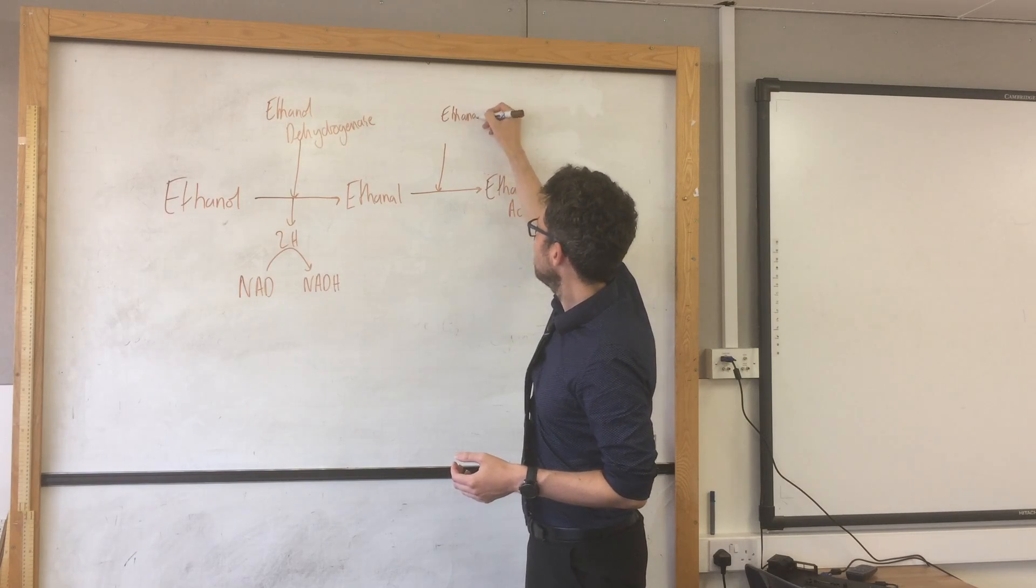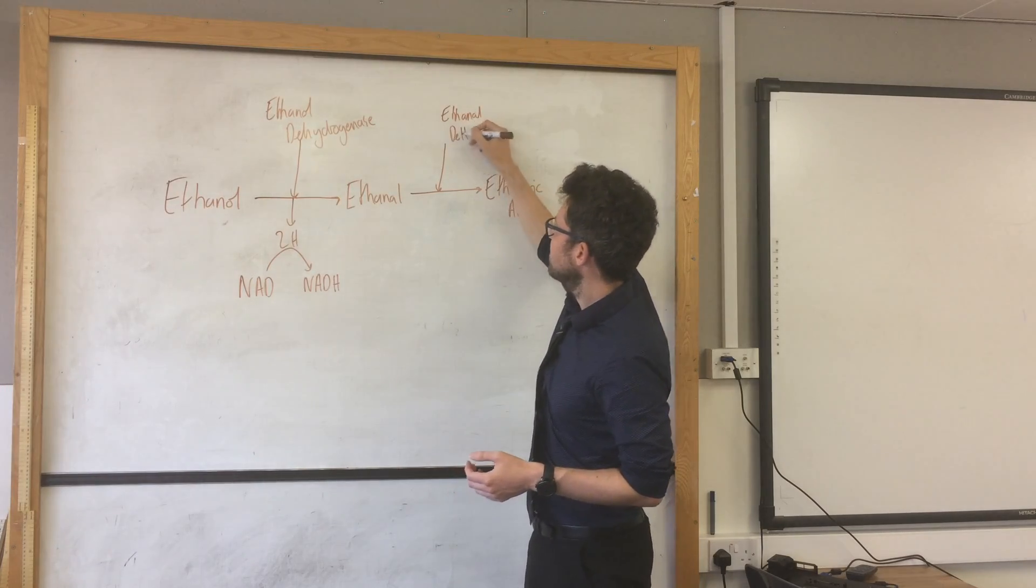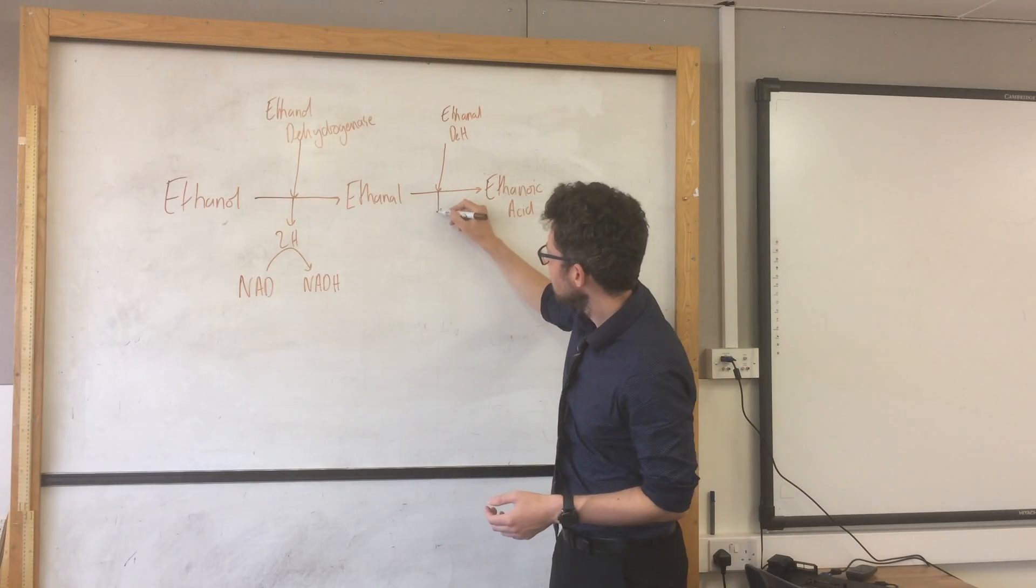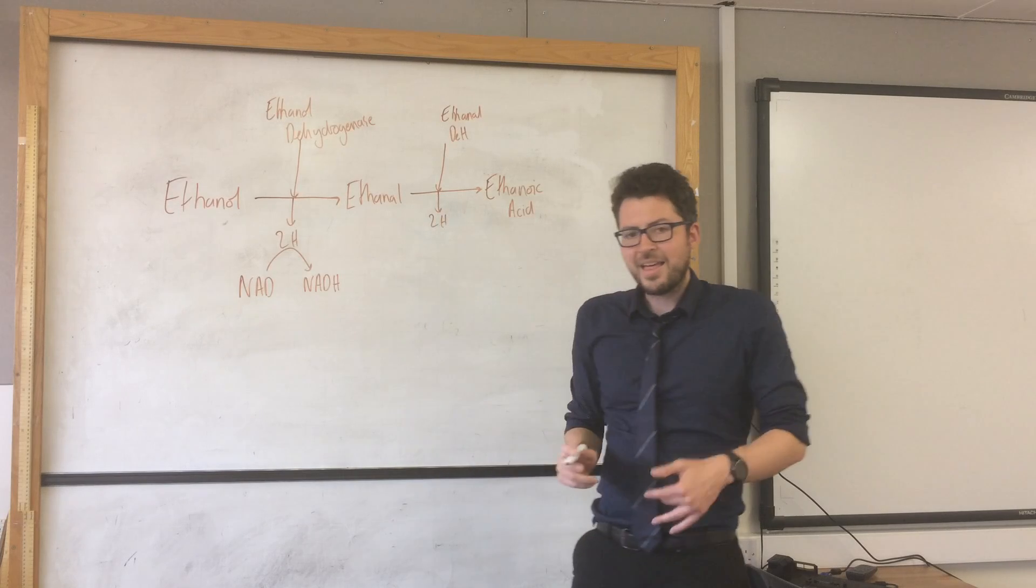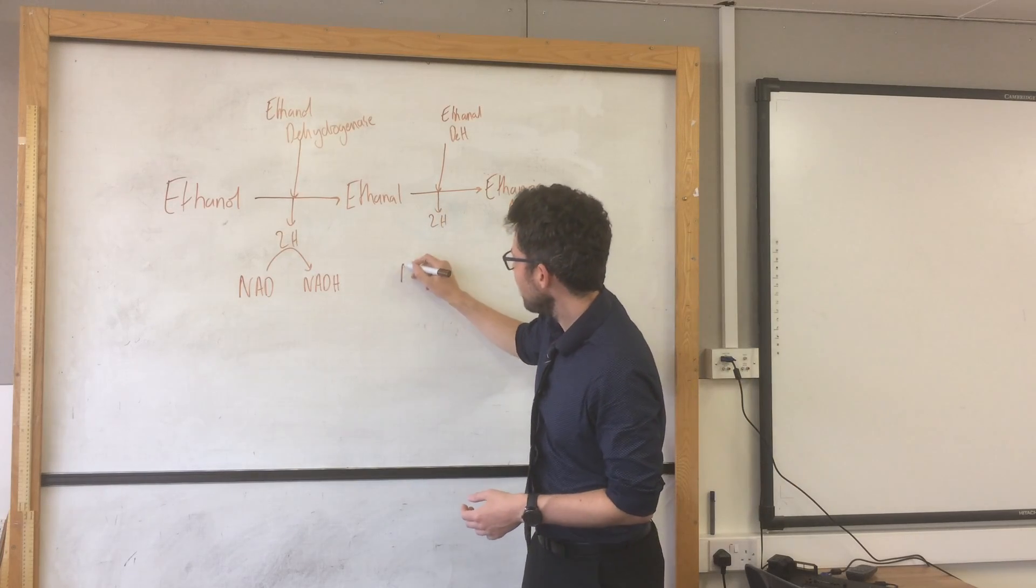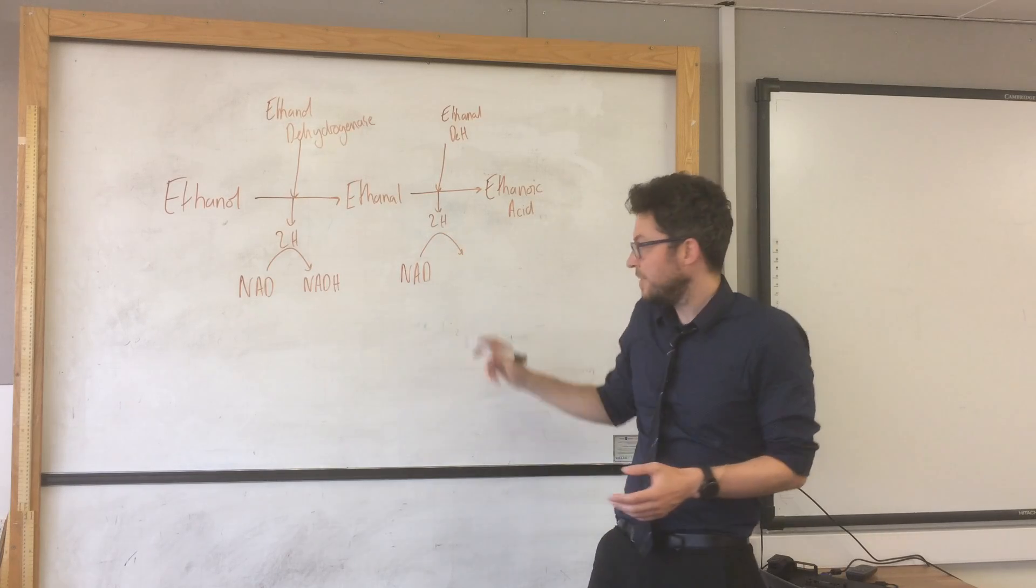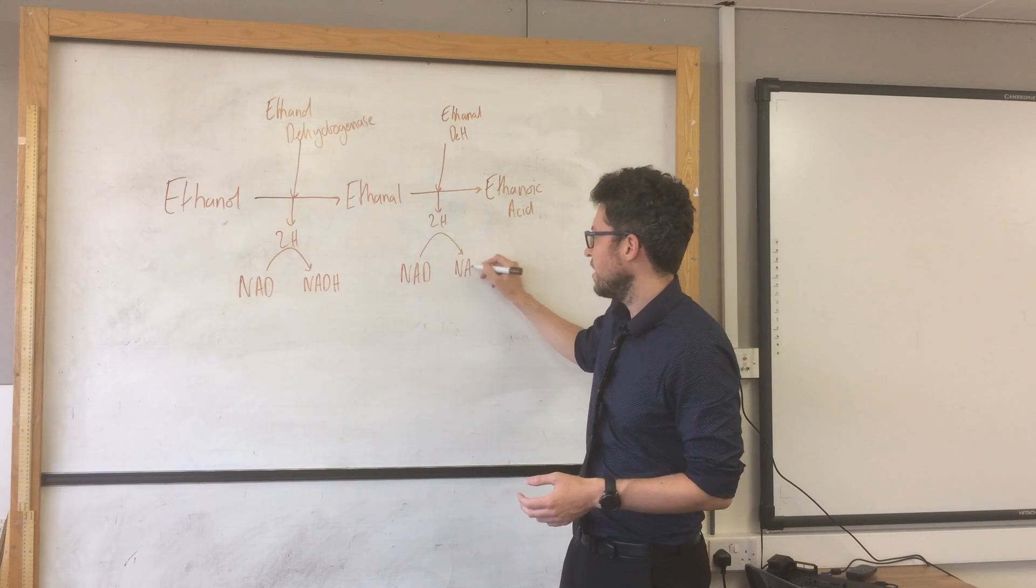So ethanal dehydrogenase. I'm not going to write the whole thing out. So ethanal DH. And again that removes hydrogen from ethanal and that is taken on by NAD to form reduced NAD again.